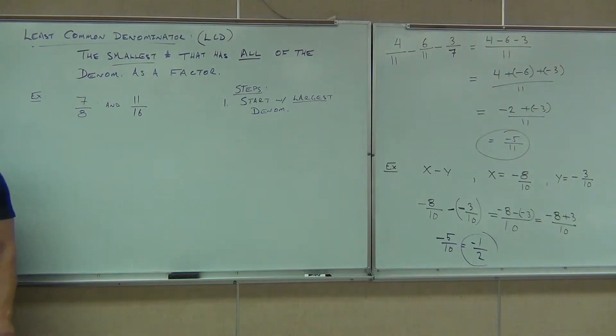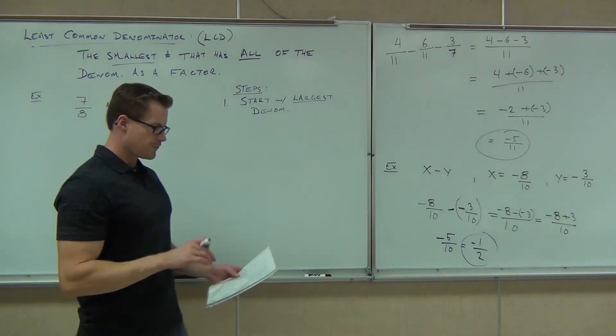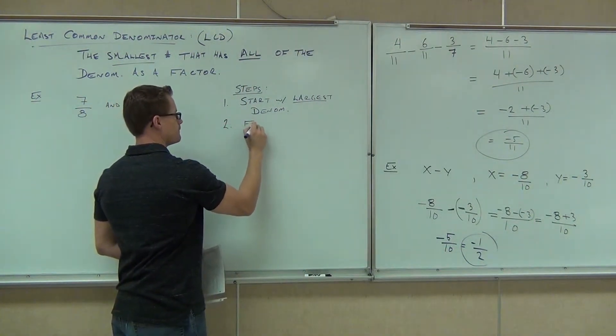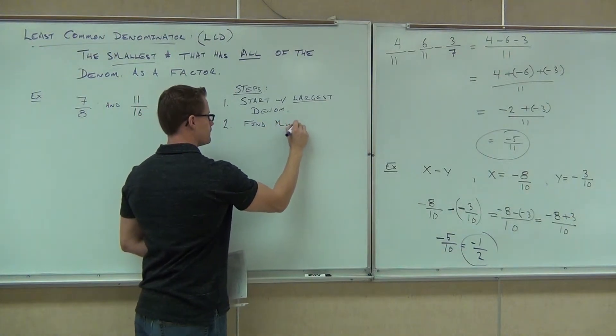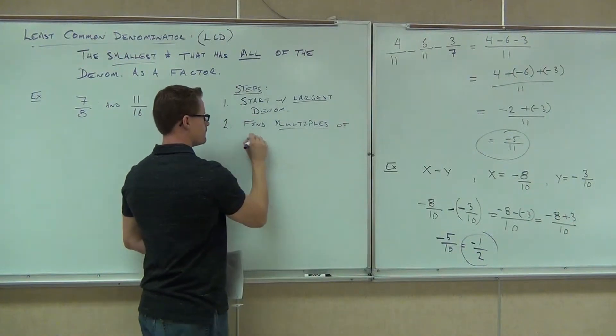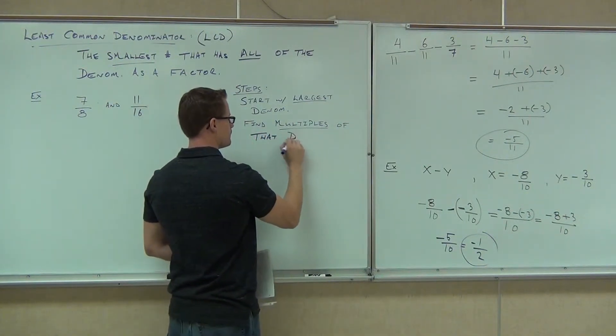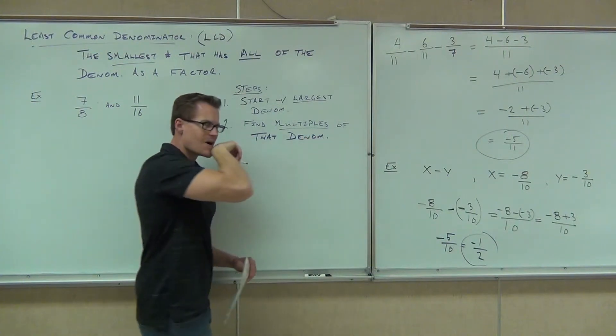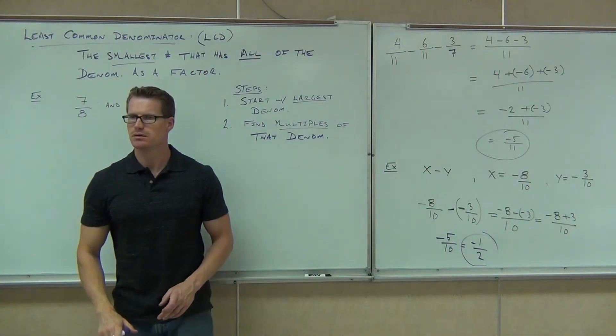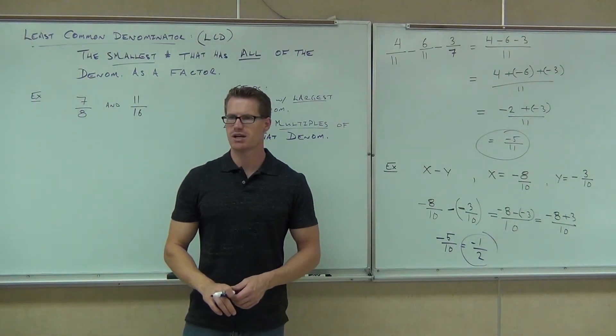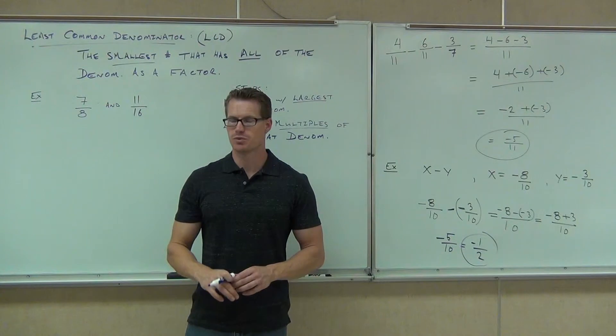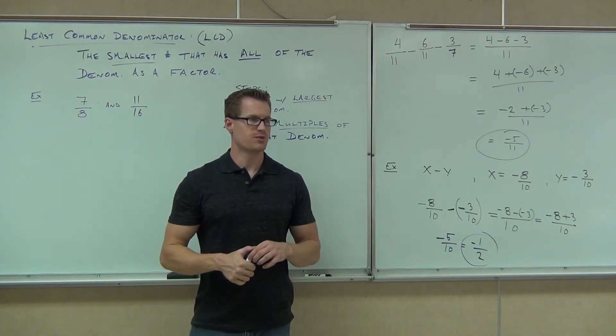Start with the largest denominator. Which one is the largest denominator here? 16. We're going to start with 16. We're going to find some multiples of that denominator. Are you familiar with what a multiple is? Are you sure, everybody? It's fine if you don't remember. We'll go over it right now if you don't.